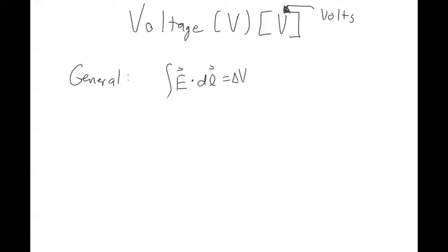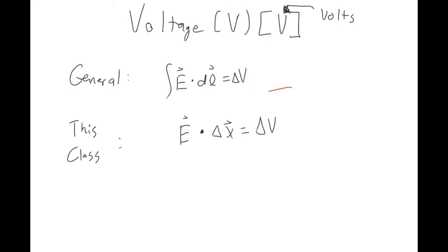Voltage is the integral of the electric field over some path length. For this class, what we'll take that to mean is that the electric field dotted with some distance equals a change in voltage. This dot product is a special form of multiplication that takes two vectors in and produces a scalar quantity — you multiply two vectors and the result is a scalar.